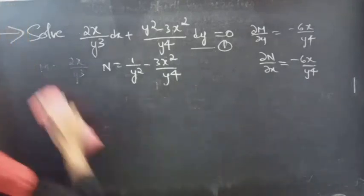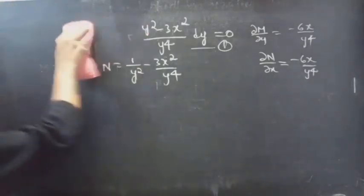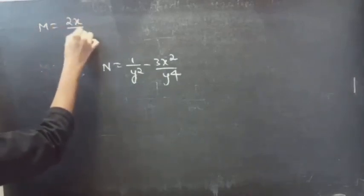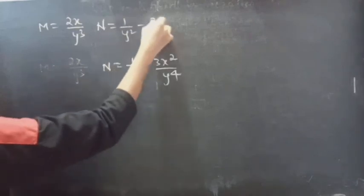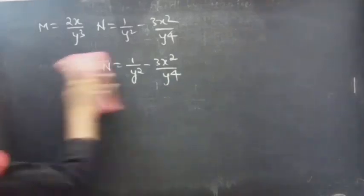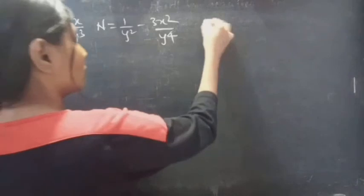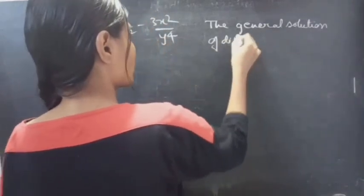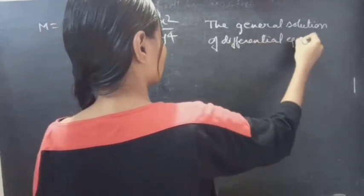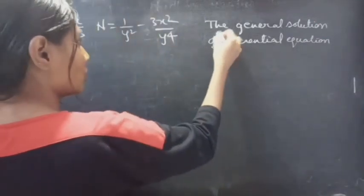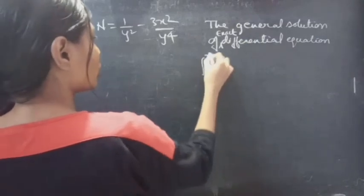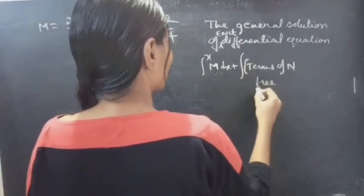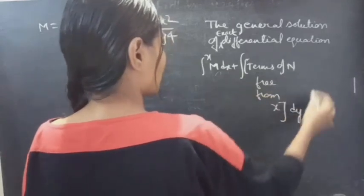Now we need to find the general solution of the given differential equation. The general solution of an exact differential equation is given by: ∫M dx + ∫(terms of N free from x) dy = C.